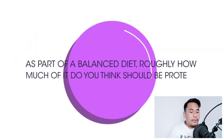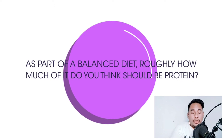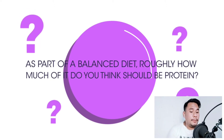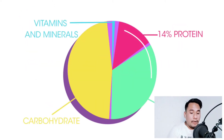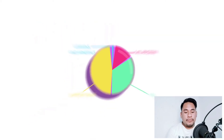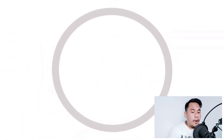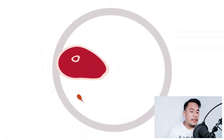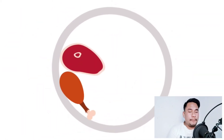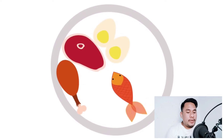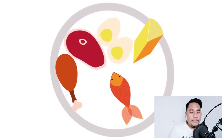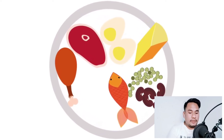As part of a balanced diet, roughly how much of it should be protein? About 14%. Sources of protein in our diet include meat, fish, eggs, cheese, beans, and nuts.